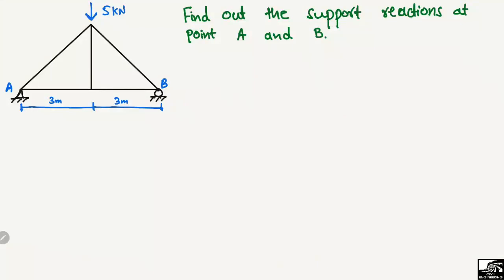Hello guys, welcome back to the Civil Engineering YouTube channel. Please subscribe for daily civil engineering videos. In today's lecture, we are going to analyze this truss structure and find out the support reactions at point A and at point B. The truss has two supports: a hinge support at point A and a roller support at point B.